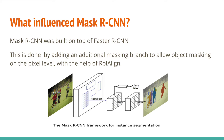Mask RCNN was influenced by Faster RCNN, which improved on Fast RCNN by combining region proposals and classification into one CNN. Features learned during classification can effectively be reused for region proposals. Faster RCNN outputs class labels and bounding boxes for each object of interest. Mask RCNN adopts this approach and adds a branch that outputs a binary mask indicating whether a given pixel is part of an object, originally using ROI Pool. However, feature map regions produced by ROI Pool were slightly misaligned to the original image, which was problematic for pixel-level mask prediction, leading the authors to develop ROI Align.